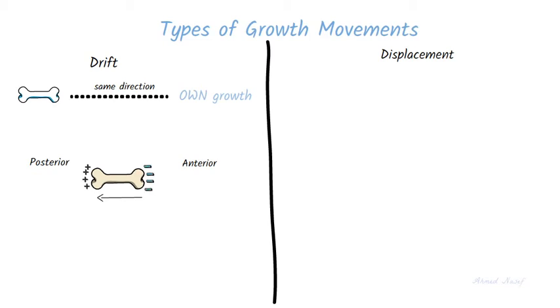Then what is displacement? Displacement means that the bone as a whole is moving or displaced. There are two types of displacements: primary displacement and secondary displacement.